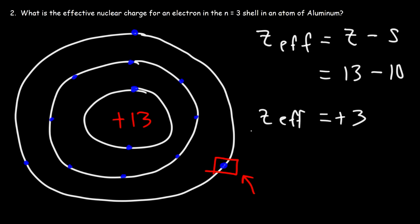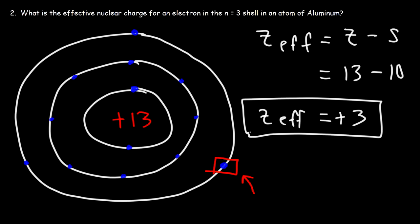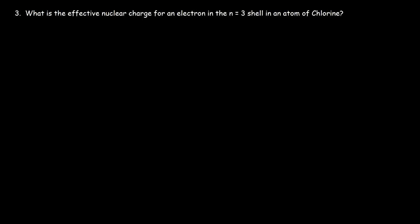So 3 is the effective nuclear charge for an outermost electron in aluminum in the n equal 3 shell. Let's work on one more example for practice: what is the effective nuclear charge for an electron in an atom of chlorine in the third shell?